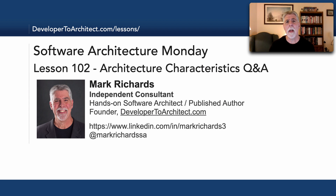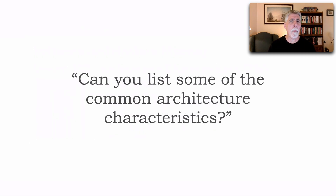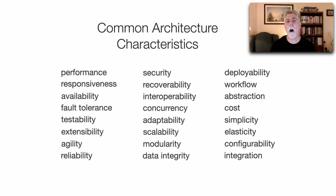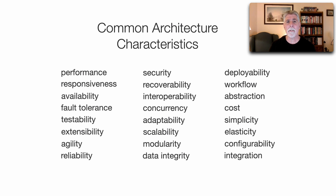The first question I usually get, and it's a very frequent one, is: can you list some of the common architecture characteristics? We talk about these 'ilities,' these non-functional requirements, system quality attributes — I call them architecture characteristics. A lot of times we don't know the whole list. There are literally hundreds of these, but here's a list of some of the most common ones.